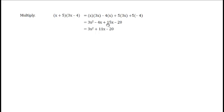3x squared plus 11x minus 20. Since these were opposite signs, we subtracted. We have more positives than we do negatives. Therefore, our sign is going to be positive 11x. And, this is your final answer.